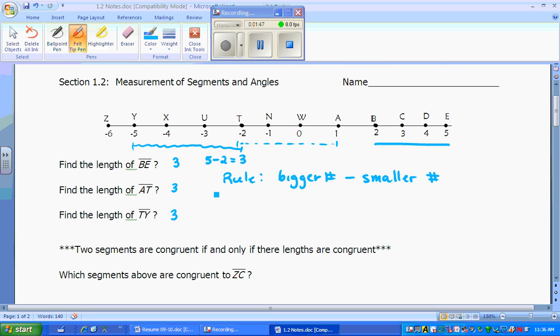In AT, the bigger number is 1. You would subtract negative 2. Well, 2 negative numbers next to each other. Negative minus a negative becomes positive, so that's 3.